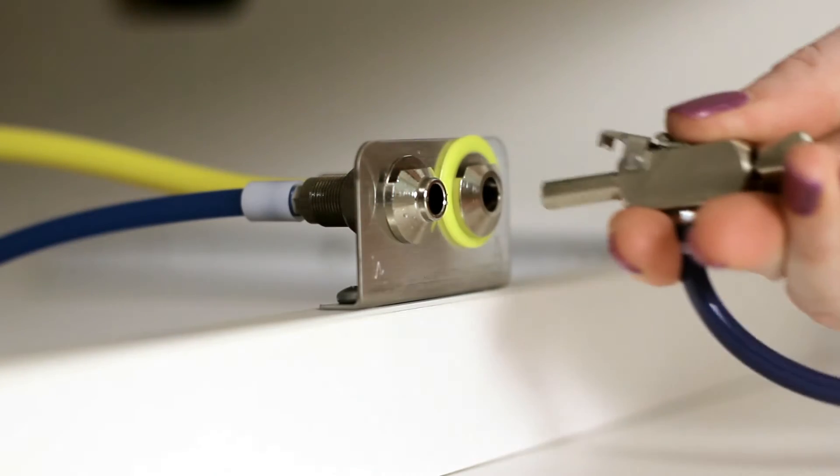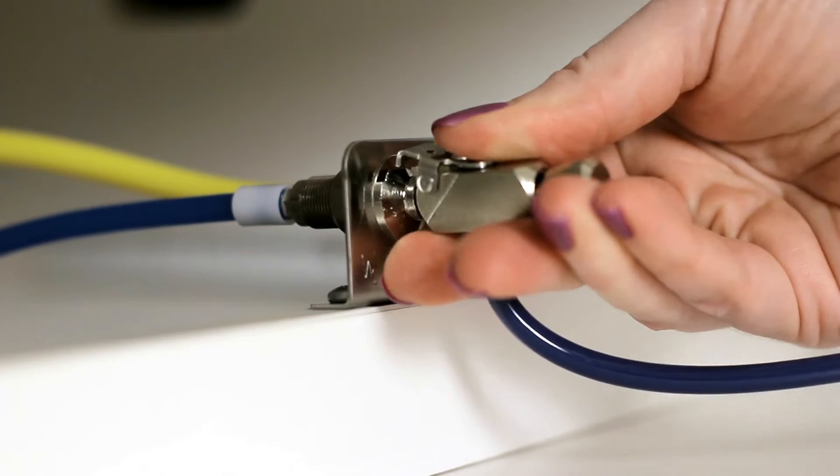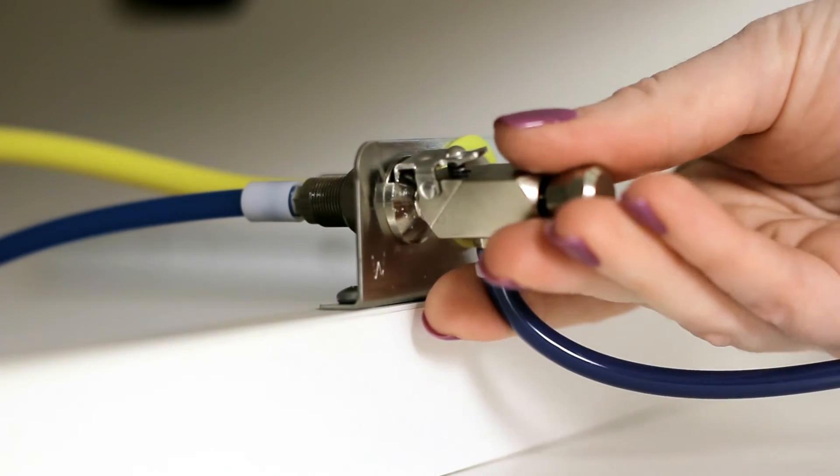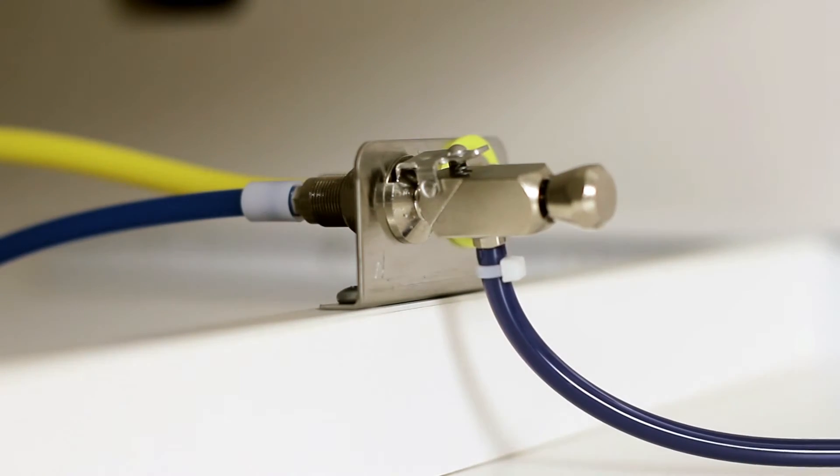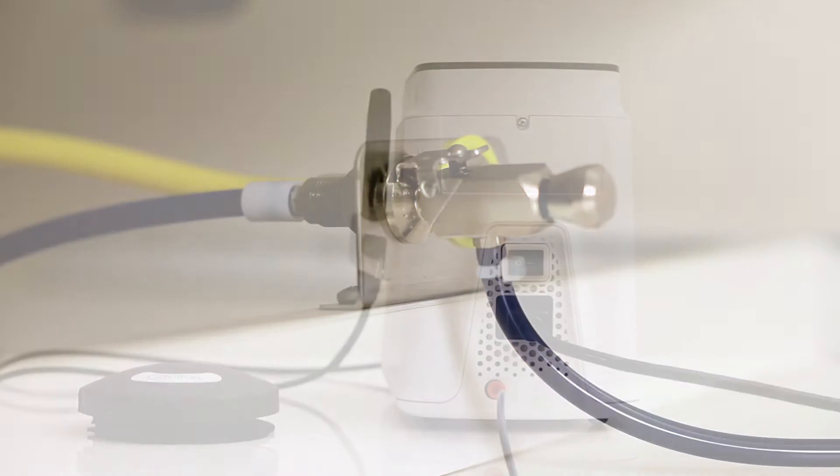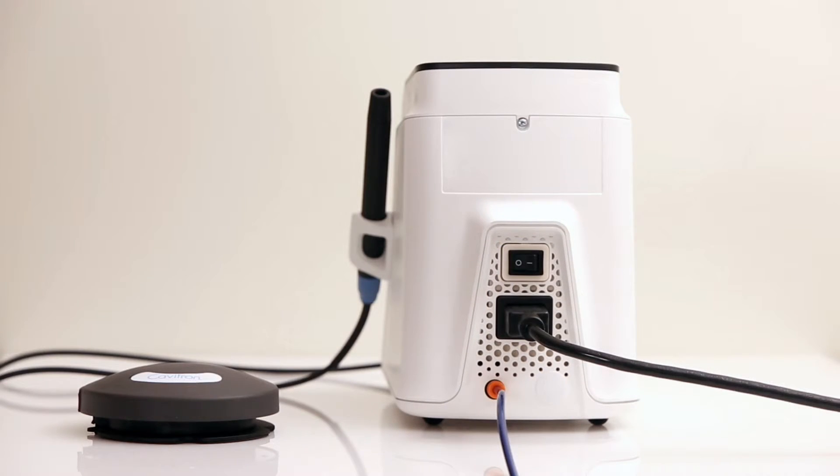Connect the quick disconnect on the other end of the hose to the dental office water supply or a Cavitron Dual Select dispensing system. Please be sure to inspect all of the connections to make certain there are no leaks.